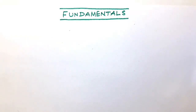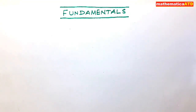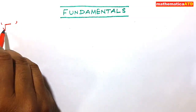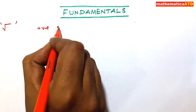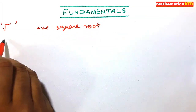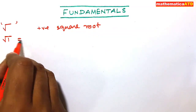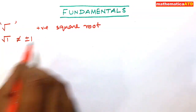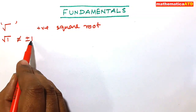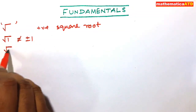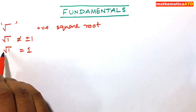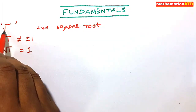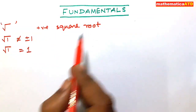We shall discuss some fundamentals of mathematics. The first basic point is square root. What is the meaning of this sign? This is a symbol for positive square root. So if I write square root of one, you can't write it as plus minus one — this is a wrong concept. Root over one is equal to only one. Root gives you a positive quantity; root does not give you any negative quantity because this symbol is for positive square root.